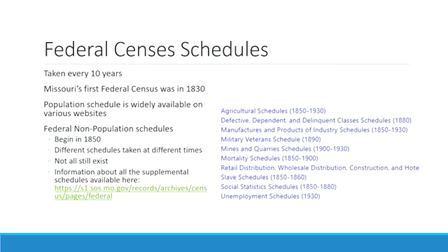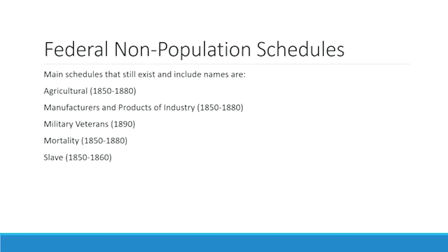Information about all the supplemental schedules is available on the federal census portion of our website. We're going to talk about the non-population schedules that do still exist and include names. The agricultural schedule exists from 1850 to 1880. The manufacturer's schedule and the products of industry schedule — they renamed them at various times — also exists for 1850 to 1880. The military veteran schedule exists for 1890. The mortality schedules exist for 1850 to 1880, and the slave schedules for 1850 to 1860.